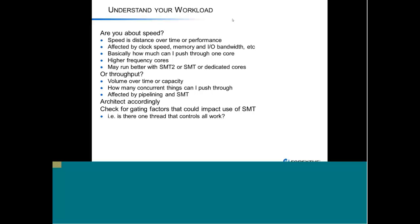Is your workload all about speed or is it all about throughput? Because Power 6 and Power 7 more and more are all about throughput. When we talk about speed, we're talking about distance over time — this is where gigahertz matters, the fastest individual core. Think about a single-lane highway with a Bugatti Veyron driving at 246 miles an hour — it goes a very long distance because it has a dedicated environment. But if you're talking about throughput — how many things can you push through in the same timeframe — that's the multi-lane highway. This is where pipelining and simultaneous multi-threading come in.